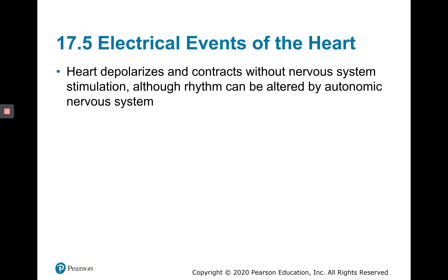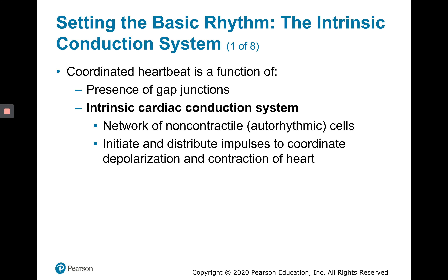The heart is able to depolarize and contract without any nervous system input. This is possible because the heart contains pacemaker or non-contractile cells that can spontaneously depolarize. We do use the autonomic nervous system to modulate the heart rate, but it's not needed. The heart would still continue to beat without that autonomic nervous system intervention.